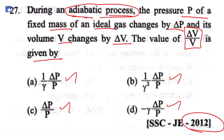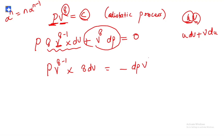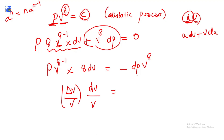The question asks for dV/V. Rearranging the differentiated equation, we get P·V^(γ−1)·γ·dV = −dP·V^γ. We need to bring V^γ to one side to isolate dV/V.